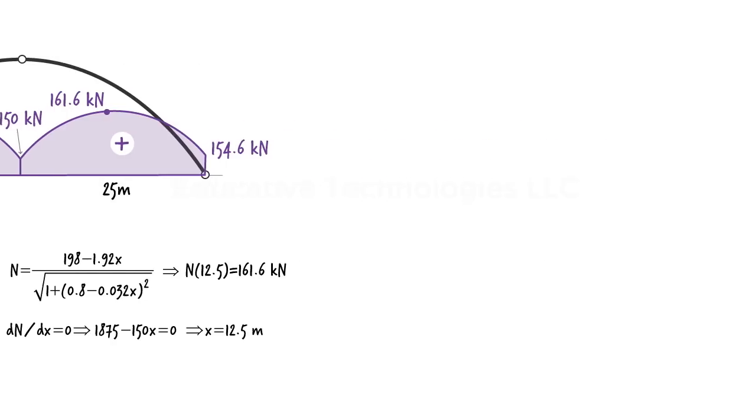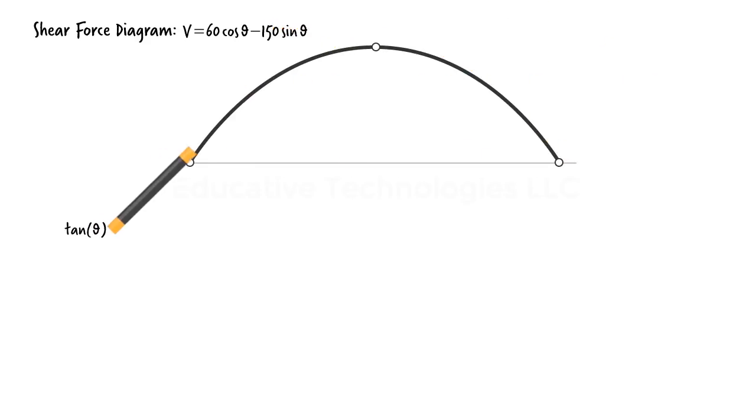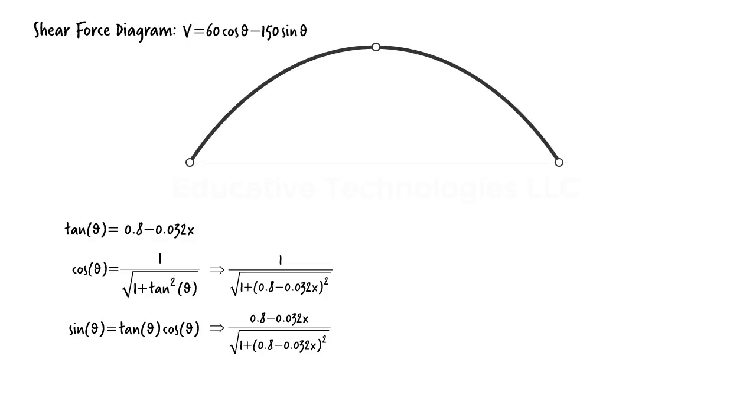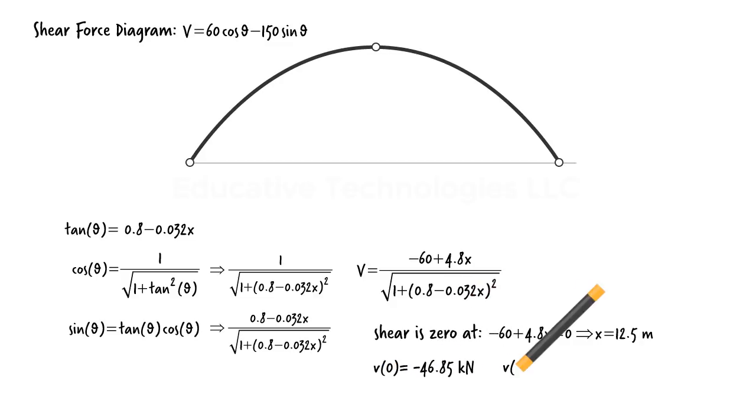Finally, to draw the shear diagram, we are going to use this equation. Using the same trigonometric expressions as before, we end up with this equation for shear. The numerator for the equation tells us that shear is 0 when x is 12.5. To graph the equation, we need to evaluate it at x equals 0 and x equals 25. Here is the diagram.